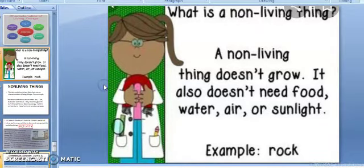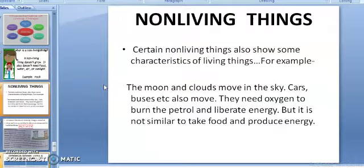Now see, you have already studied various characteristics of living things. Now there are certain non-living things which also show some of these characteristics. For example, the moon and the clouds move in the sky. Cars, buses, motorcycles, they also move. So can we call these objects living? No. Now why? Cars, buses and motorcycles need petrol for energy. They need oxygen to burn the petrol and then it liberates energy. But it is not similar to taking food and burning it in the living organisms. That is why these will not be considered as living things.